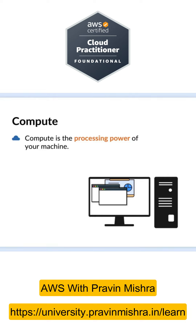Why? Because your computer has a definite compute power and it can process only a limited amount of requests at a time. So when you have the web browser open with multiple tabs, playing music, and doing presentation work, your computer is doing several tasks simultaneously and needs the processing power. Once you close those tabs or stop the music player, your computer will start working smoothly because it has now de-allocated the processing power.